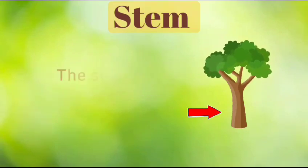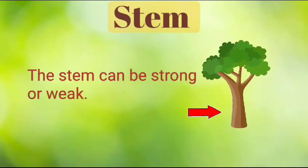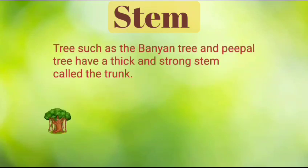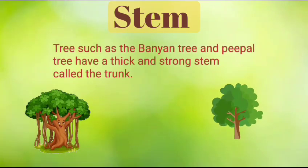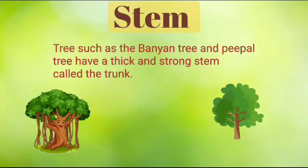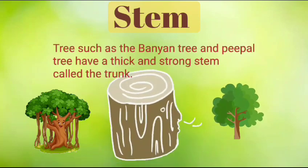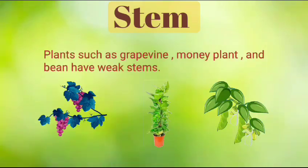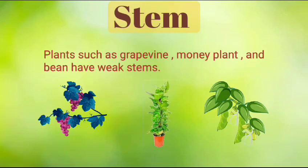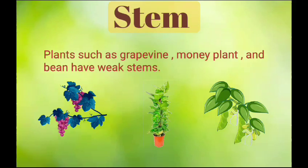Stem. The stem is the main part of the shoot. The stem can be strong or weak. Trees such as banyan tree and peepal tree have a thick and strong stem called the trunk. Plants such as grapevine, money plant and bean have weak stems.